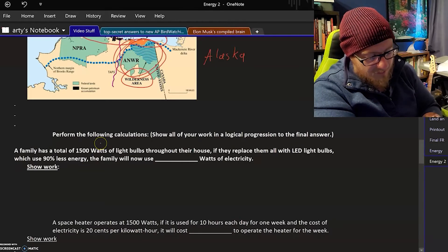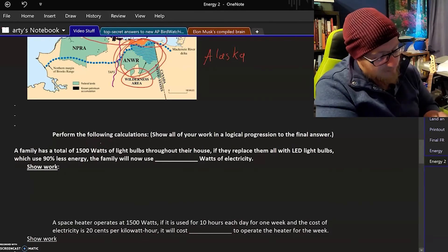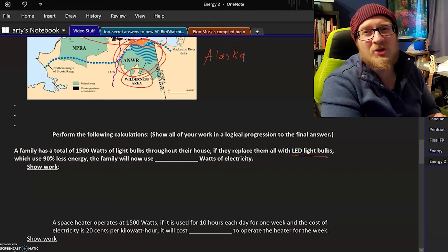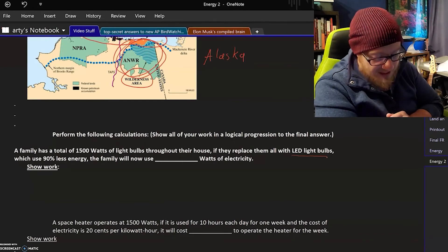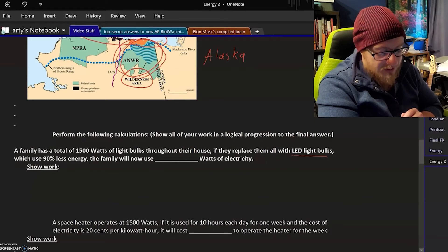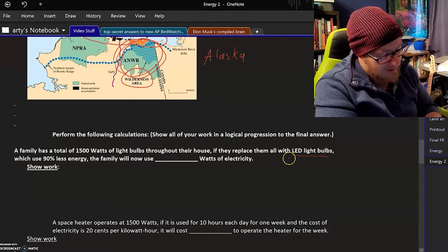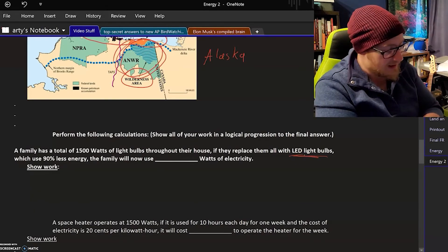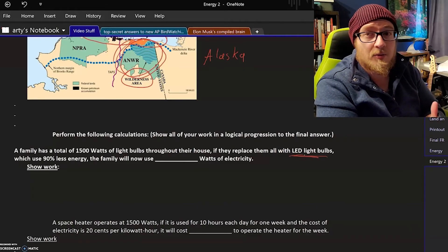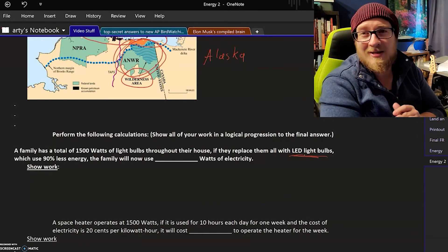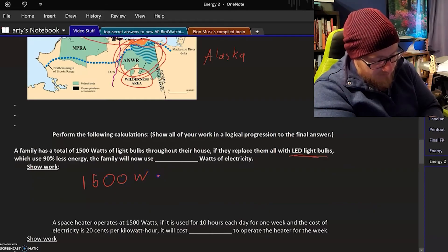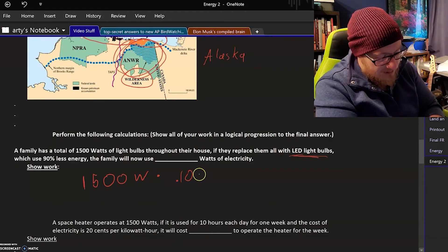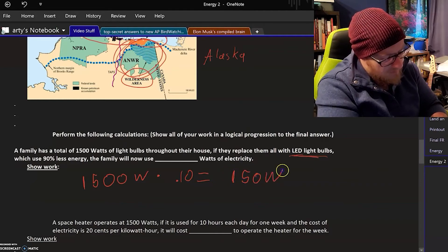A family has a total of 1500 watts of light bulbs throughout their house. If they replace them with LED light bulbs, which are significantly more efficient than standard incandescent light bulbs and use 90% less energy, the family will now use how many watts of electricity for their light bulbs? Well we just said that LED bulbs use 90% less energy, so we're only using 10% of the original energy. 100 minus 90 is 10. So here we've got 1500 watts and we just need to find 10% of that, right? Because that's 10% of the energy. So they would be using 150 watts of electricity to power all their light bulbs. That is a massive improvement in efficiency.